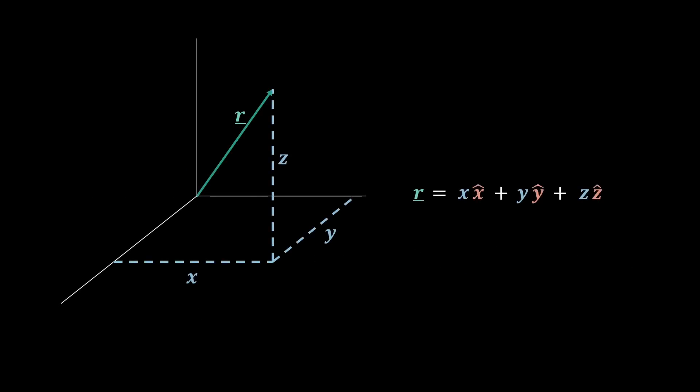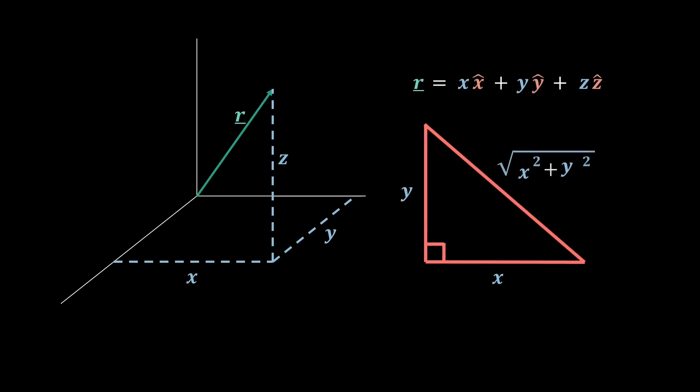As mentioned earlier, a vector takes a direction and magnitude, so it's quite useful to work out what this magnitude is. This is the length or size of this vector r. So to find this, we first consider the right angle triangle formed by x and y. And using Pythagoras, it's clear to see that the diagonal here will be the square root of x squared plus y squared.